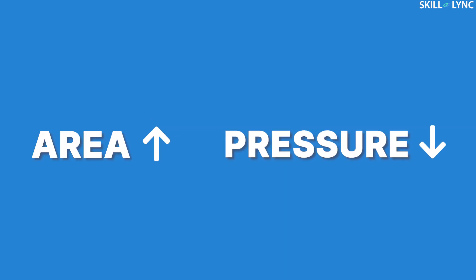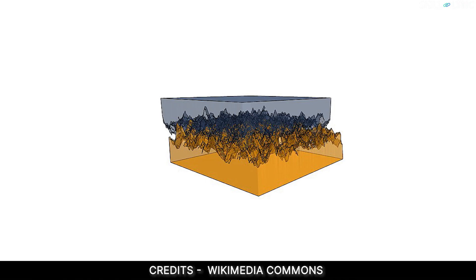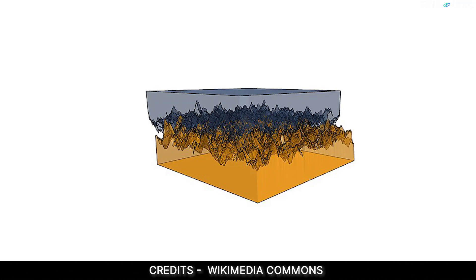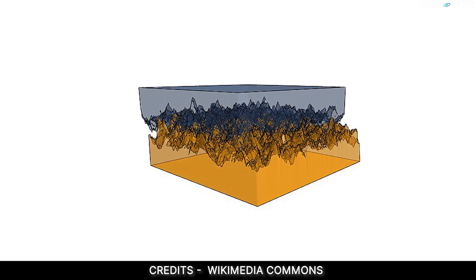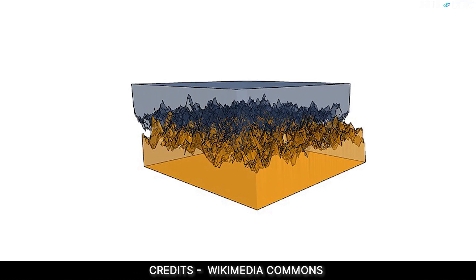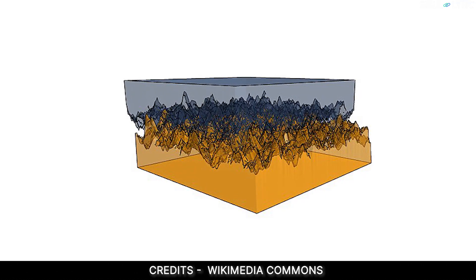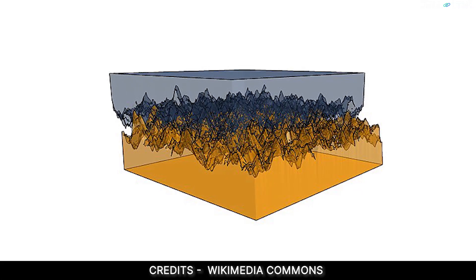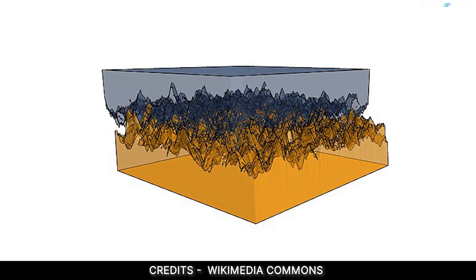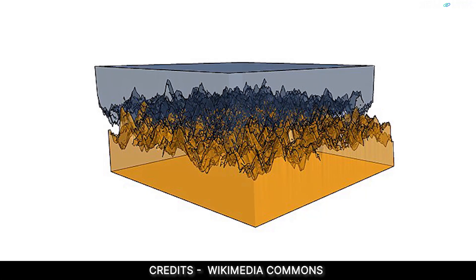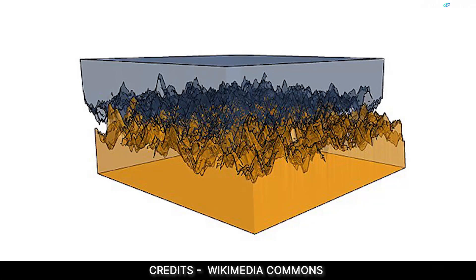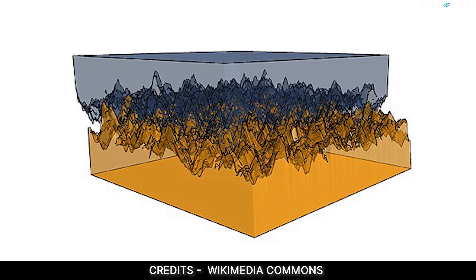By increasing the total area, we reduce the pressure, which in turn reduces the amount of pressure on each of the surface ridges. Even though we have increased the total area of the object, the irregularities between the two surfaces will not lock together due to the less pressure on them.